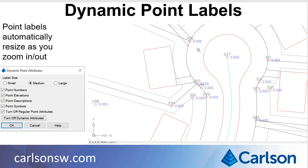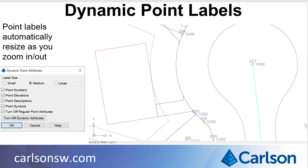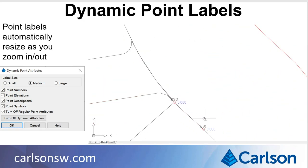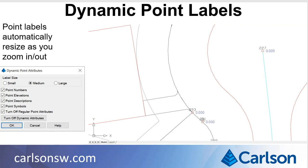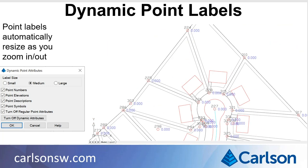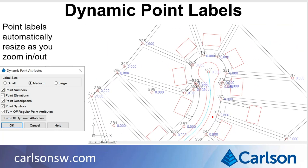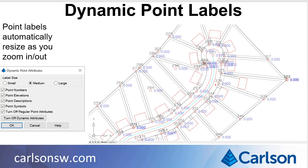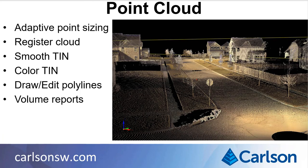Dynamic point labels automatically resize the point number, elevation, description, and symbol as you zoom in and out. This way, you can keep the point labels readable no matter your zoom level.